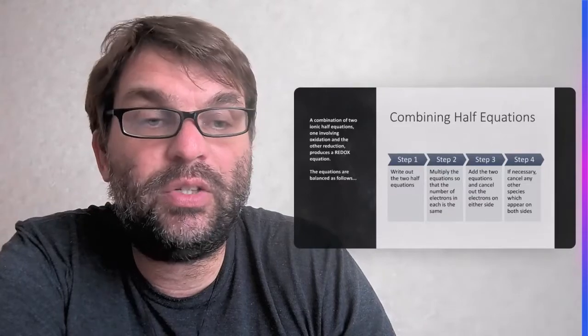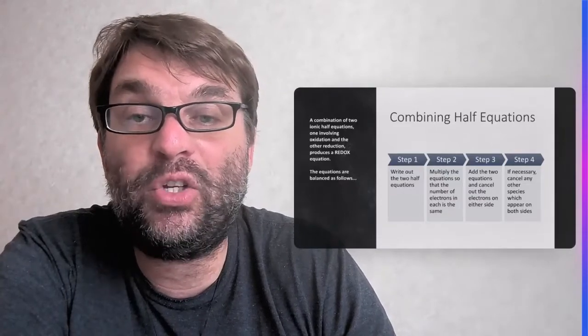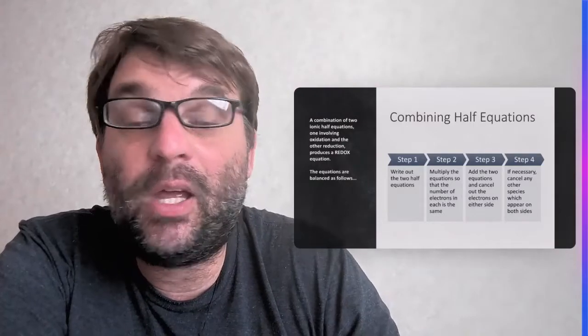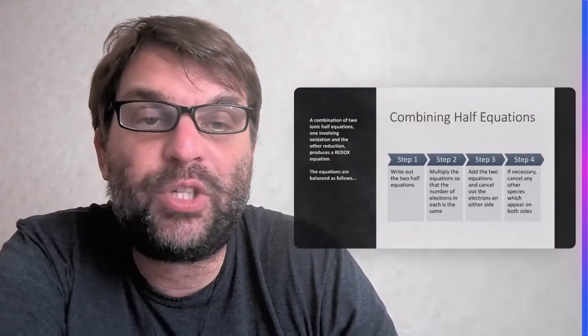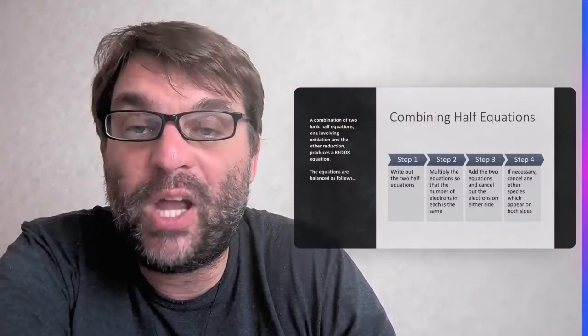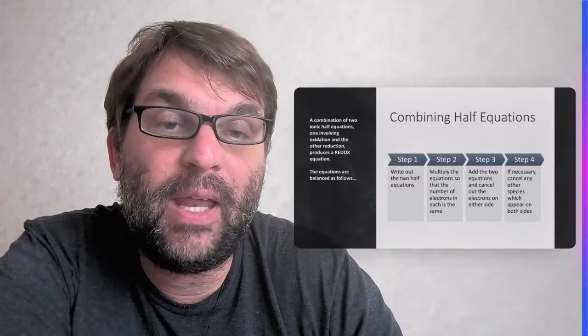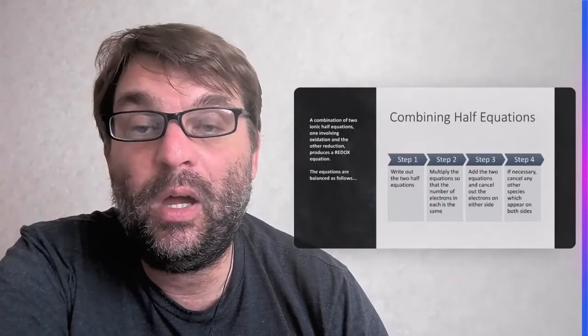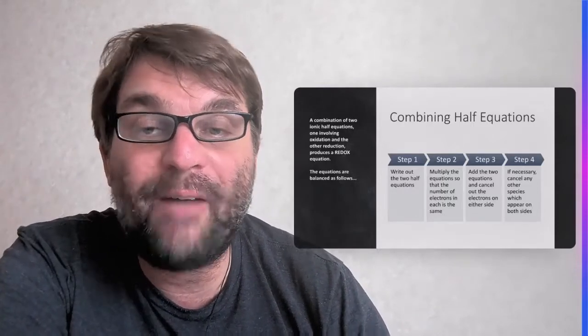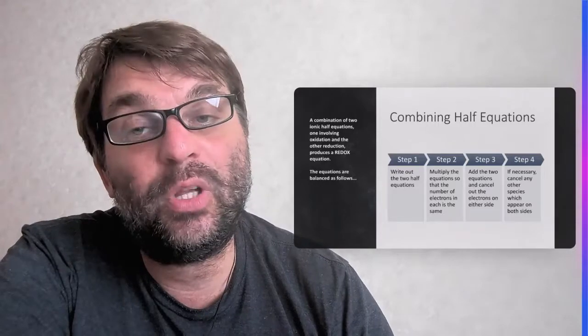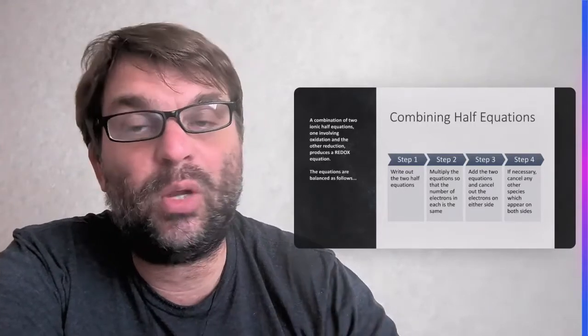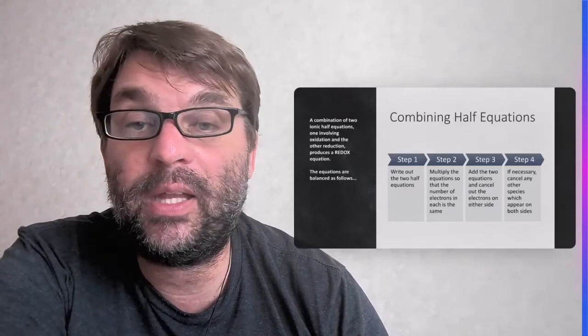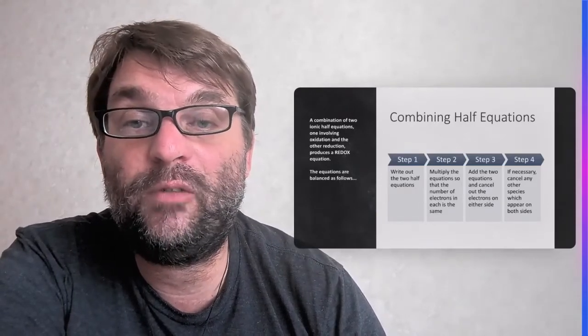So the last thing we're going to do is combining these half equations to make a balanced full equation. And again, there's simple steps, and the four steps are: write out the two half equations which you've just created, and then you've got to multiply the equations so the number of electrons are the same on both parts of both half equations. Then we can cancel them out, those electrons. And finally, because we're now introducing water and protons, some of those might also cancel out as well, once it's finally balanced.